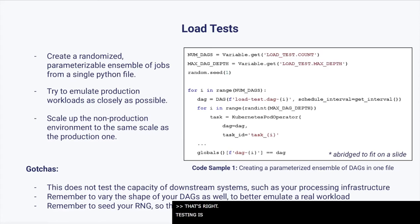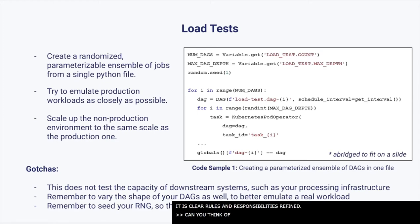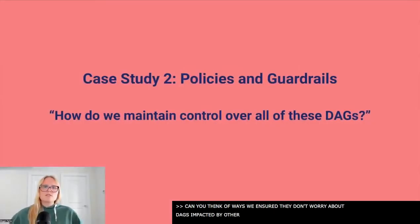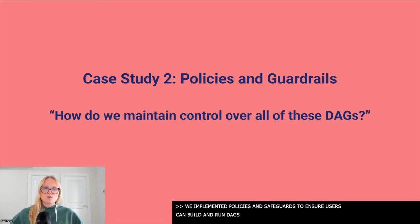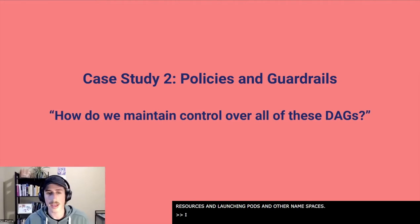Testing is really important and it's ultimately the responsibility of both Airflow developers and platform engineers to ensure the environment is reliable. It can be difficult to discern ownership in a shared environment, so it's important to ensure clear rules and responsibilities are defined. Some challenges we've faced with Airflow in a multi-tenant environment that can be addressed with policies and safeguards are project naming conflicts, DAGs consuming too many resources, and DAGs launching Kubernetes pods in other namespaces.